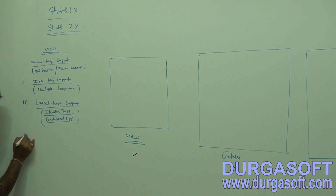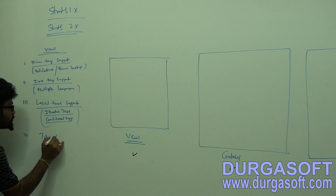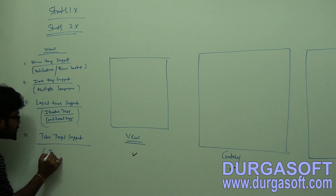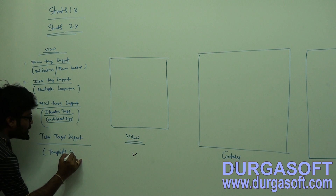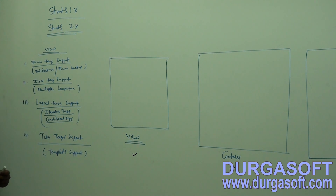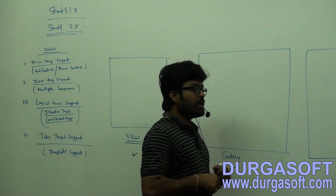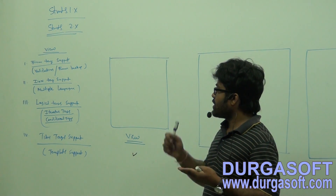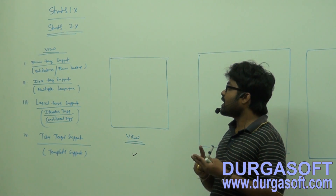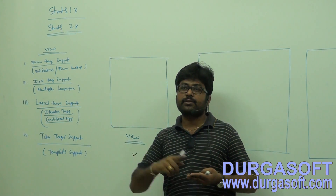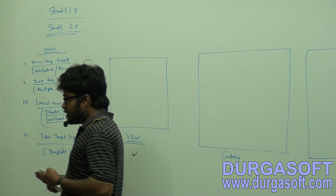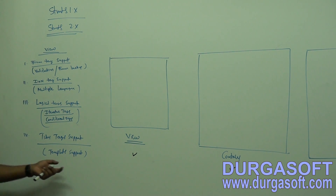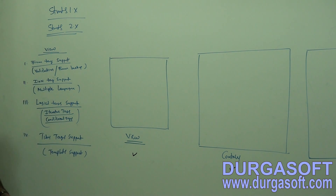Tiles tag support is also available. Using tiles tags, you can design UI templates — they provide template support internally. So for presentation, Struts provides four types of tags: form tags, i18n (bean) tags, logical tags, and tiles tags. Using these four, you can provide complete view support.